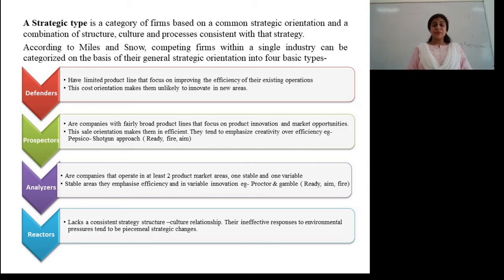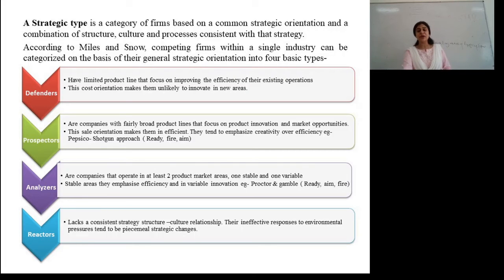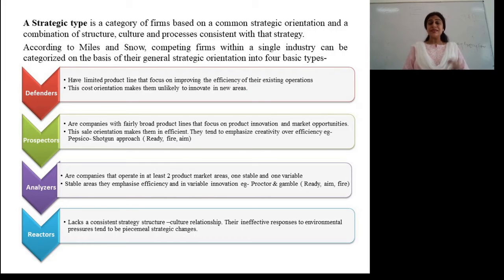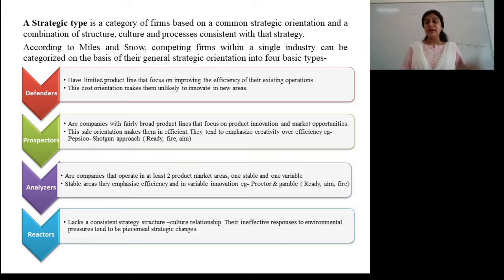Second is prospectors. These are companies with fairly broad product lines that focus on innovation — continuously bringing up R&D and always trying to come up with new products. They are more indulged in innovation and exploring market opportunities, which makes them efficient. They tend to emphasize creativity over efficiency. An example is PepsiCo's shotgun approach: ready, fire, and aim.